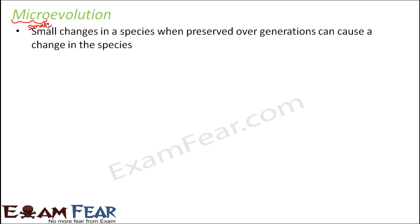Micro — the word itself means small — so it is evolution on a smaller scale. It means small changes in a species, when preserved over generations, can cause a change in the species. In micro evolution, the species still remain the same. There are some changes which take place over a period of time, but the organism does not altogether become a different species. The change takes place on a smaller scale, so they still remain part of the same species.